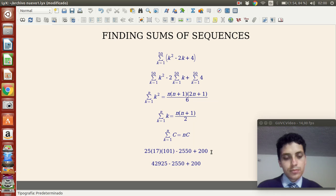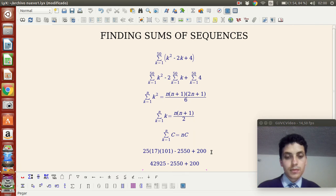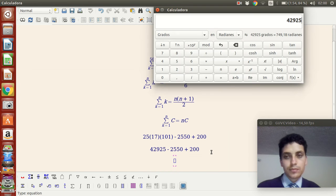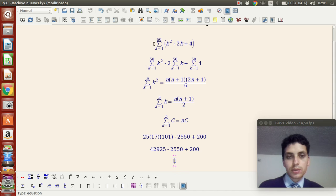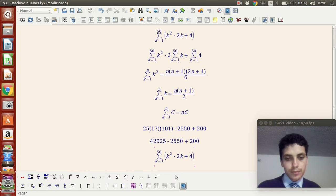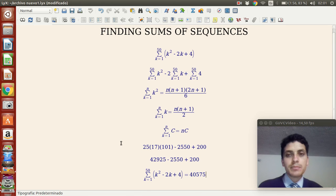And now we just need the answer. So 42,925 minus 2550 plus 200 equals 40,575. This is how you determine a sum using properties of sequences.